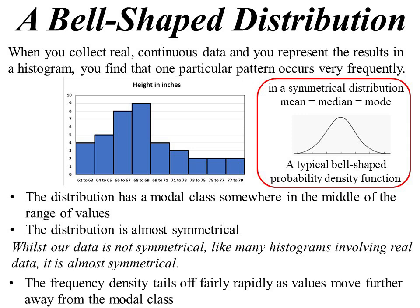Ours is not symmetrical, and that's often the case when we're collecting real data, but it's almost symmetrical. And the other key thing to look at is actually how it tails off, and it should tail off reasonably rapidly. So it comes down to a low one either side. Well, that then brings us to the normal distribution, and this is the one we're really interested in.